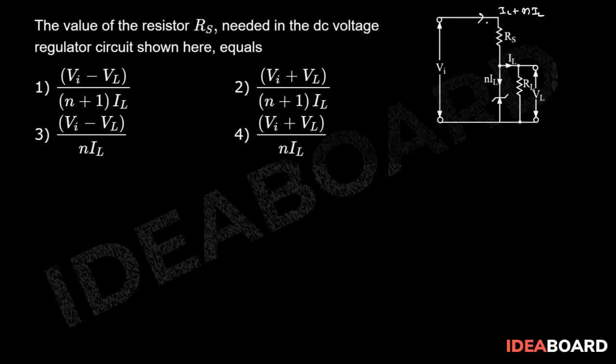Let us suppose the voltage across the resistor is VS and the voltage across the load is VL. Then we can write VS equals VI minus VL.